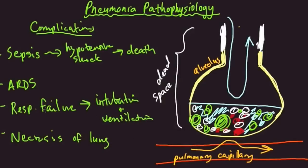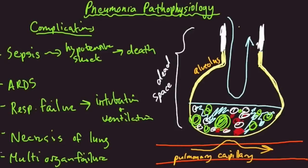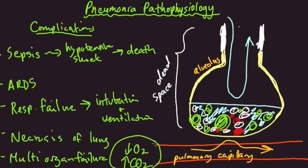Necrotic lung tissue will have to be surgically removed if the patient is going to recover. Finally, you can have generalized multi-organ failure from any of these above complications. If the patient isn't septic, it might be the respiratory failure — if you're unable to oxygenate and ventilate the patient, their oxygen levels will drop too low and CO2 levels in the blood will rise too high, creating conditions no longer compatible with life.